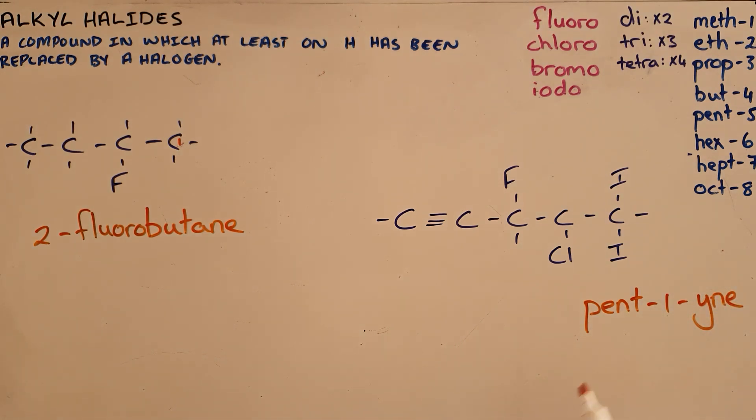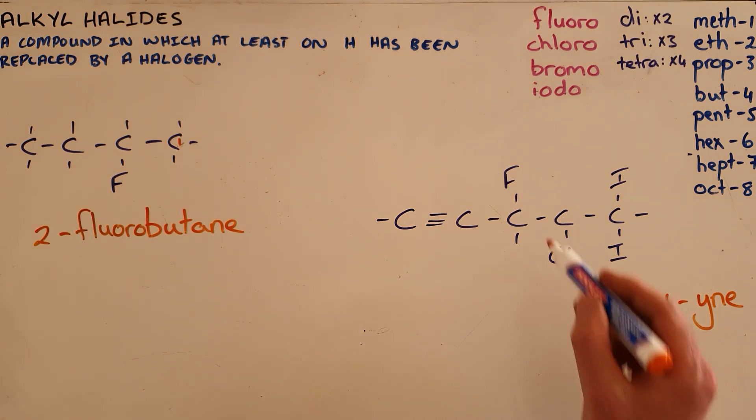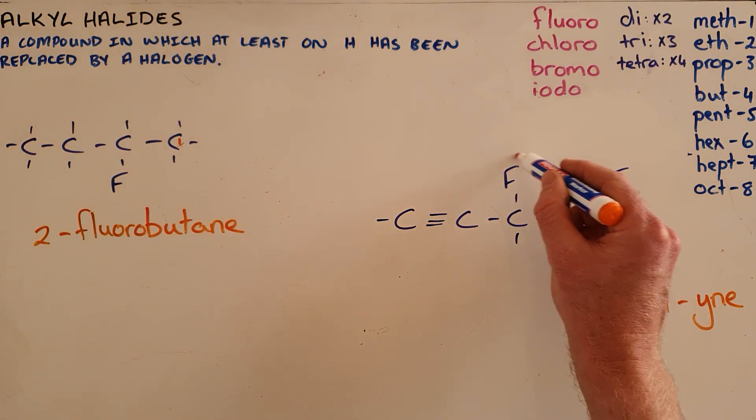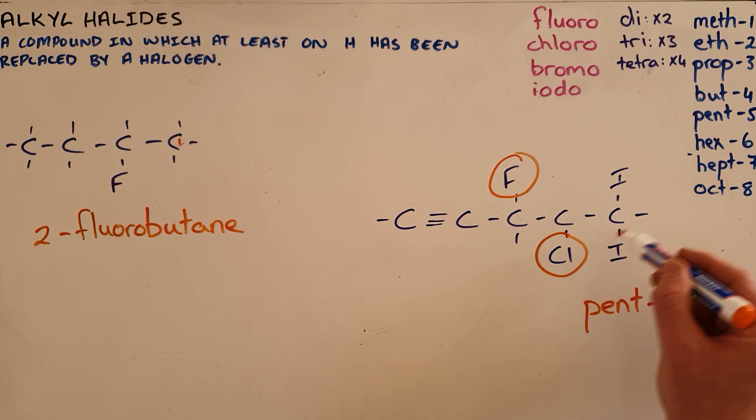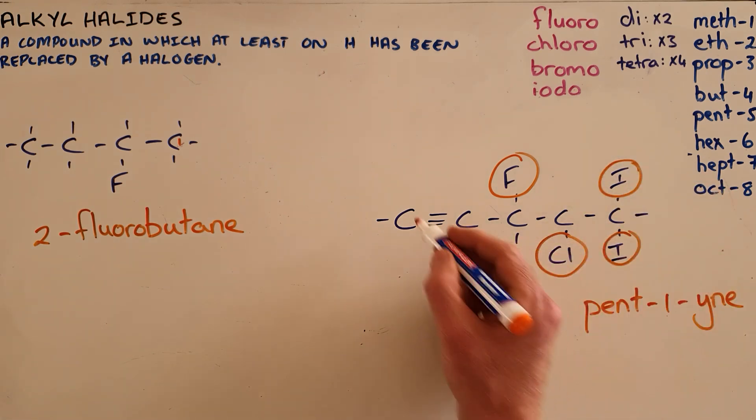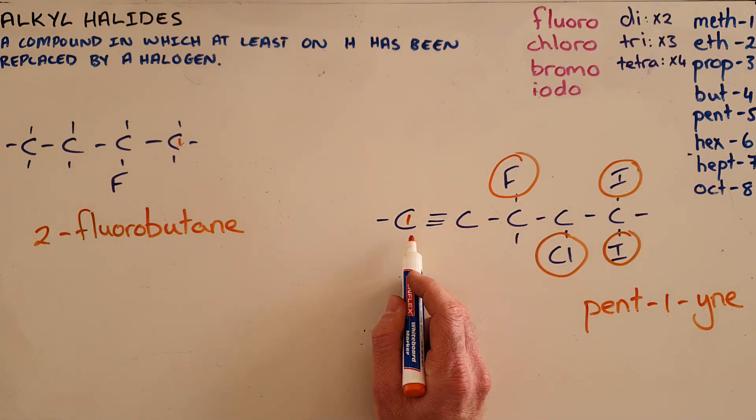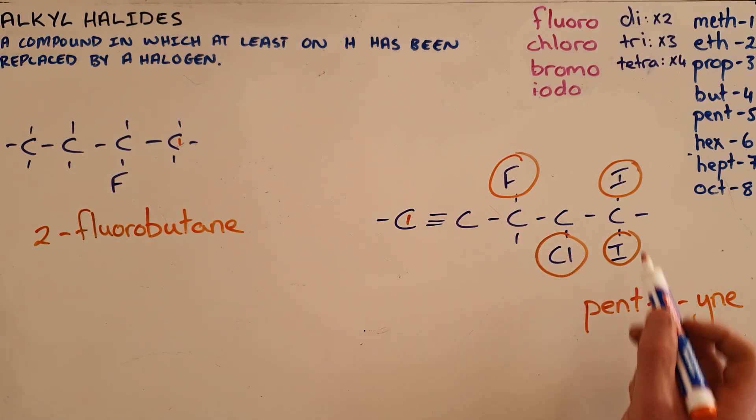that there are four alkyl halide branches here: a fluorine, a chlorine, and two iodines. Since we have started numbering with this as carbon number one, we must continue doing that in naming the entire compound.